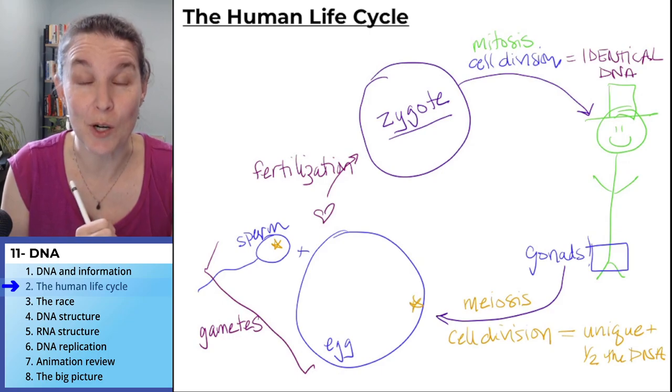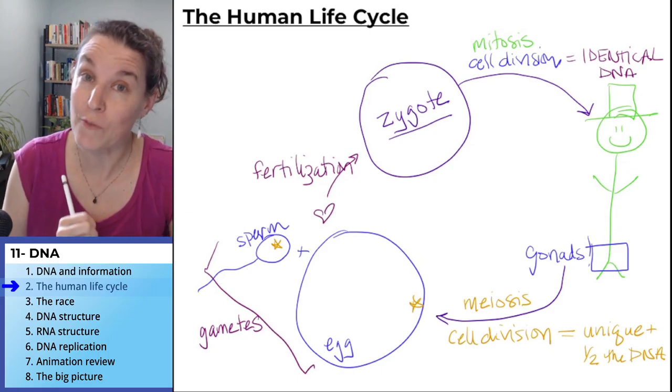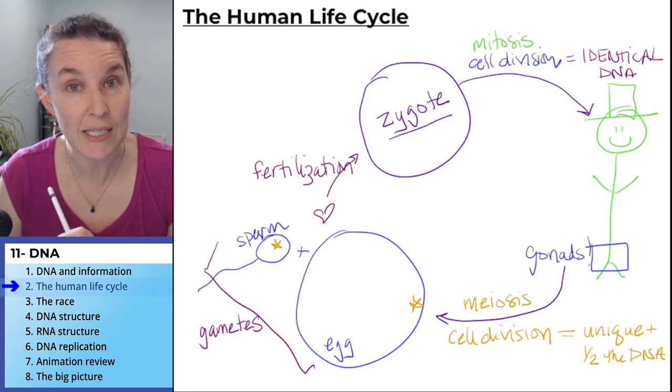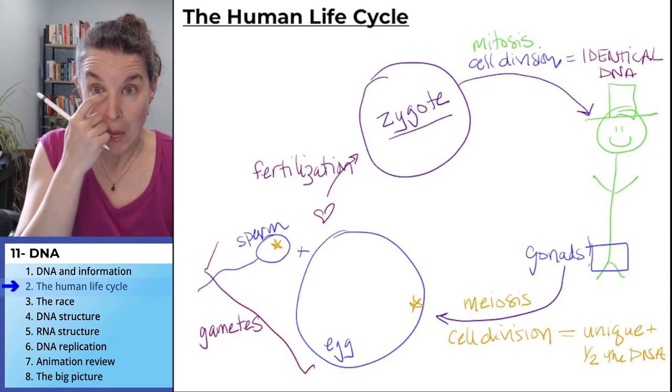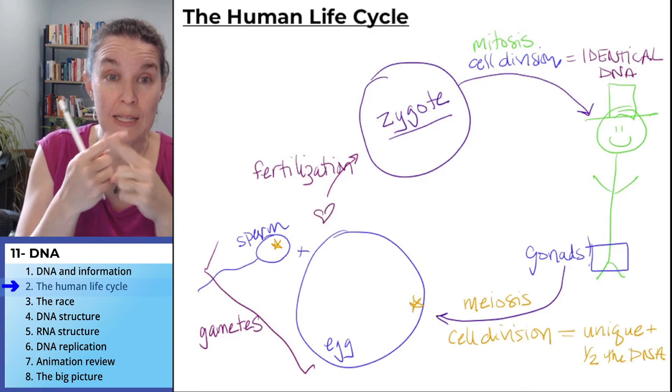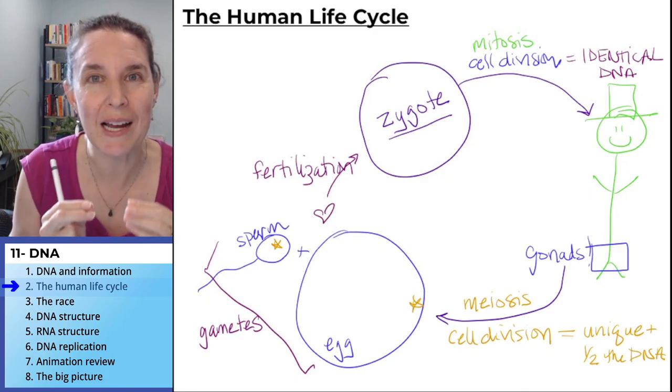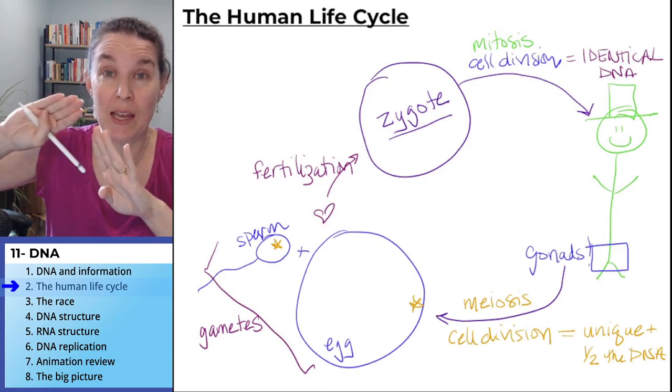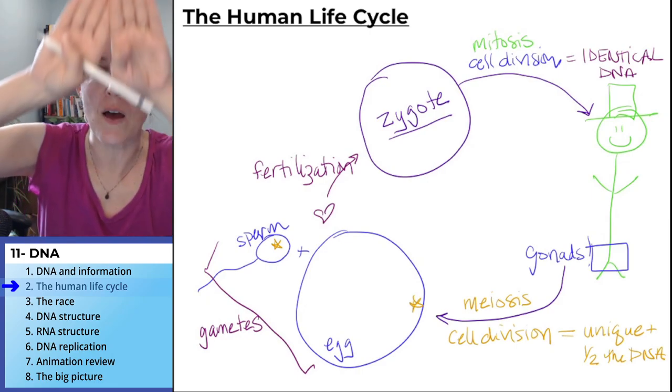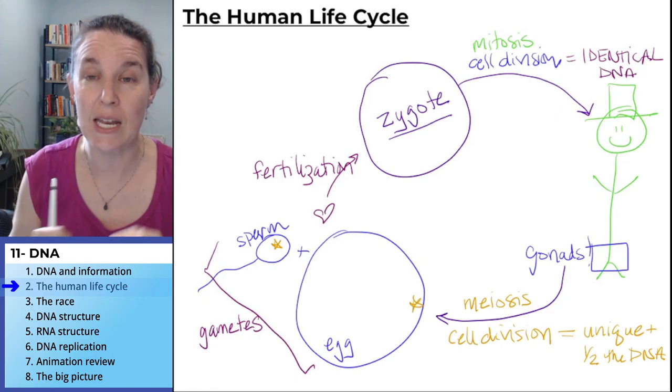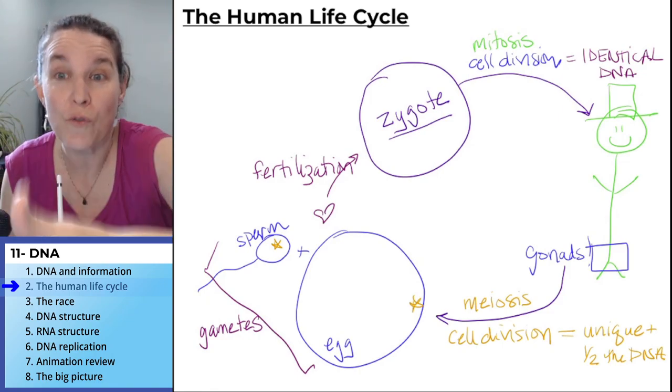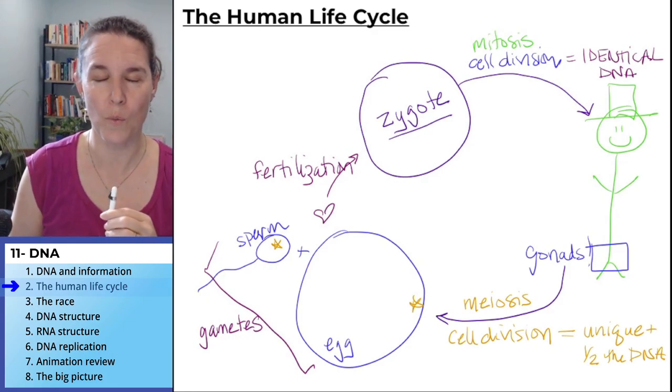If you have ovaries, you get eggs. If you have testes, you get sperm. If you combine sperm and eggs, the nuclei combine. And what started as half the DNA from the egg and half the DNA from the sperm, you now have the full amount of DNA in the zygote that goes through mitosis to form a grown-up.